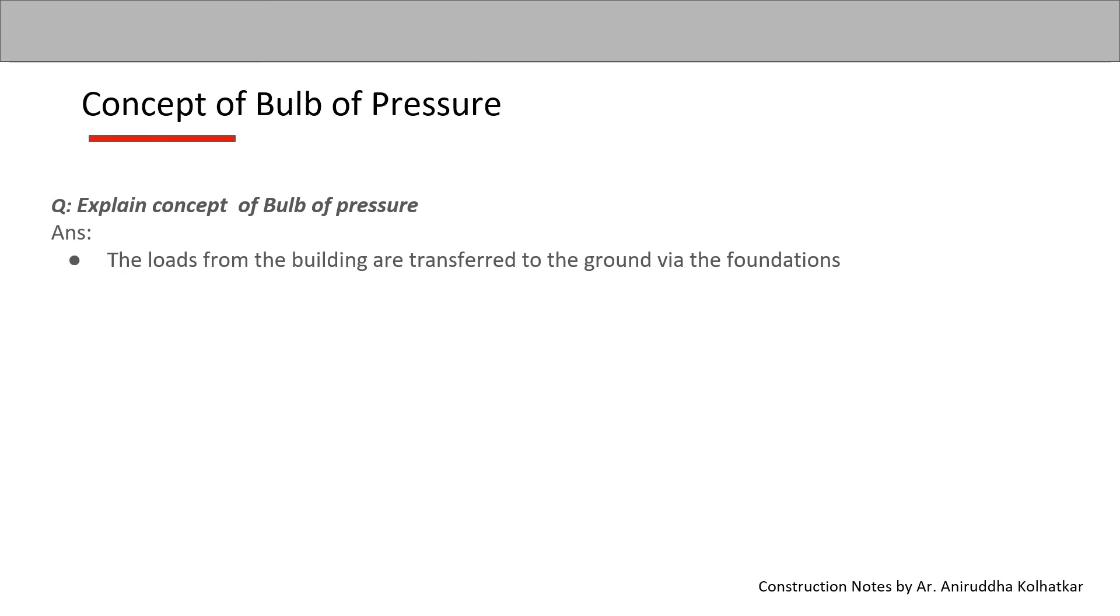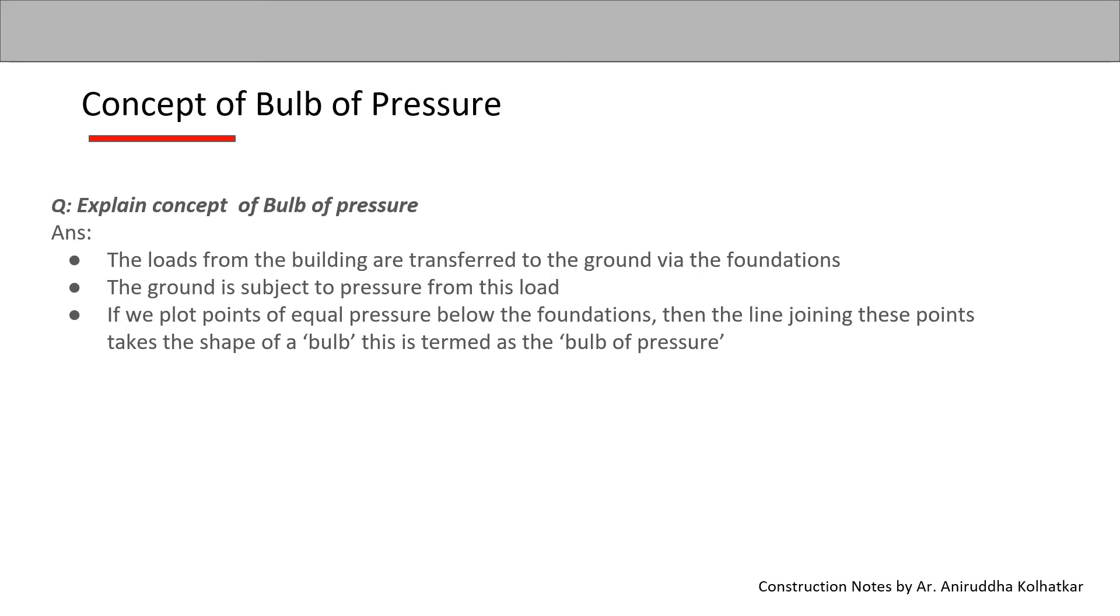The first point is that the loads from the building are transferred to the ground via the foundations. The second point is that the ground is subjected to pressure from this load. Third point: if we plot points of equal pressure below the foundations, then the line joining these points takes the shape of a bulb. This is termed as the bulb of pressure.